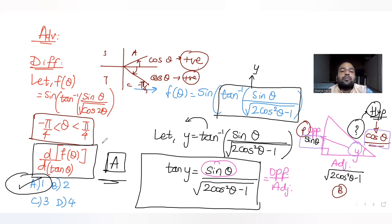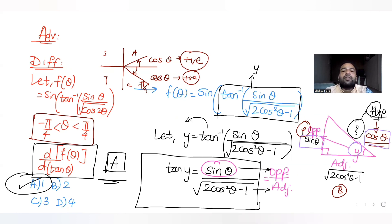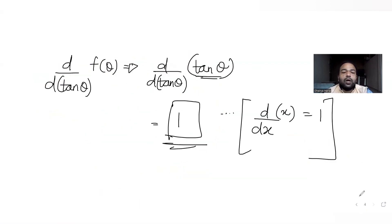I hope you have understood how to solve this type of differentiation question where we are given a complex function and asked to find the derivative with respect to tanθ. We converted f(θ) in terms of tan by substituting y; we got tany = sinθ/√(2cos²θ−1), then using Pythagoras we found hypotenuse = cosθ. Since f(θ) = siny = sinθ/cosθ = tanθ, the derivative is 1.